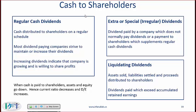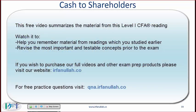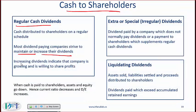Broadly speaking, when we talk about dividends, one category is where cash is given to shareholders and another is where shareholders get more shares. On this slide we talk about cash to shareholders. One type is a regular cash dividend, where cash is distributed to shareholders on a regular basis — for example, every six months. Most dividend-paying companies strive to maintain or increase their dividends. Generally, increasing dividends indicate that a company is growing and willing to share profits, so increasing dividends is viewed as a positive sign.